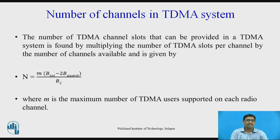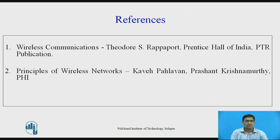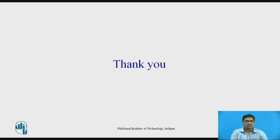The number of channels in a TDMA system: the number of TDMA channel slots that can be provided is found by multiplying the number of TDMA slots per channel by the number of channels available, and is given by N = M × (B_total − 2B_guard) / BC. Where M is the maximum number of TDMA users supported at each radio channel. Two guard bands are used — one at the low end and one at the high end of the allocated frequency band — to ensure that users at the edge of the band do not bleed over into adjacent radio services. Thank you.